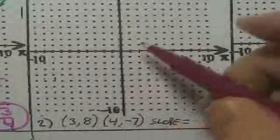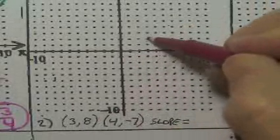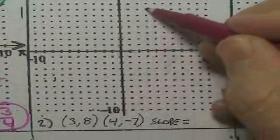Okay, we first have to plot the two points. So three, eight. One, two, three. And then up eight. One, two, three, four, five, six, seven, eight.